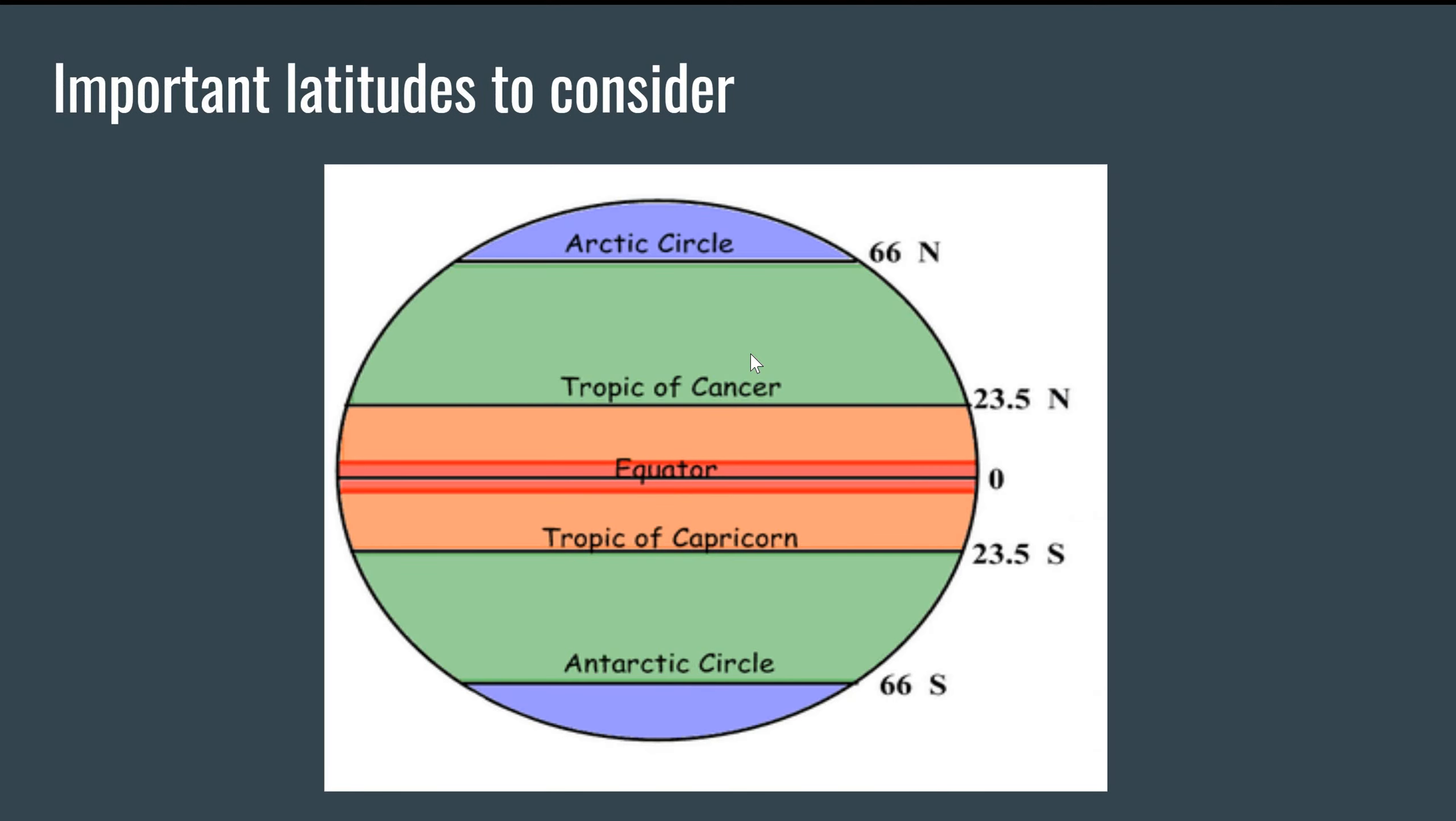So here's some important latitudes to consider. Over the course of the climate videos we'll be explaining to you why these are important. We can start here right at the middle, the equator. The equator is situated at zero degrees, a sort of transverse line around the earth that basically divides the earth into the northern and southern hemispheres.